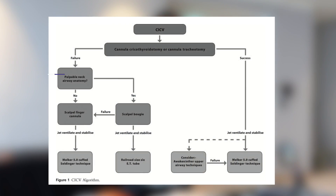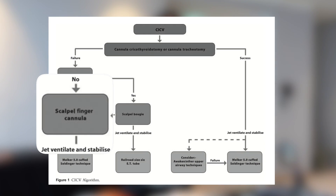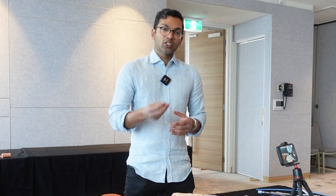Now to keep going down that algorithm, if you don't have palpable neck anatomy, you'll need to use a different technique to try and expose the neck. The first thing you do regardless is to still try your needle crike technique, but you might want to try a different approach.